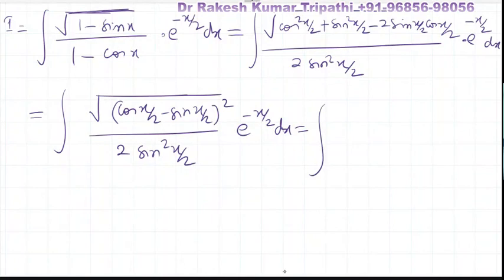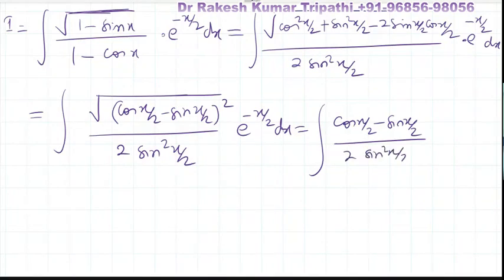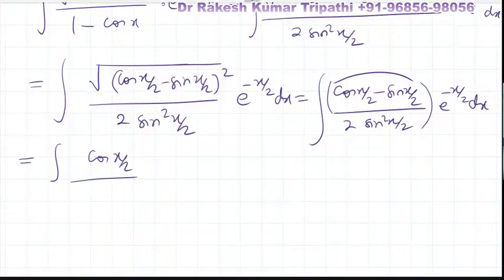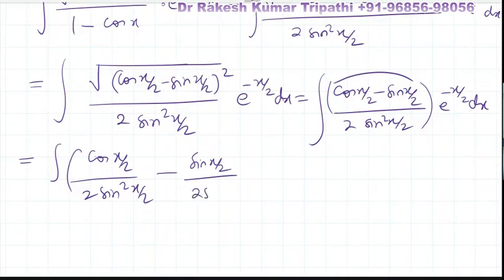The square root and square cancel each other, giving |cos(x/2) - sin(x/2)|. The integral becomes (cos(x/2) - sin(x/2)) / (2·sin²(x/2)) · e^(-x/2) dx, obtained by separating the expression over the denominator 2·sin²(x/2).